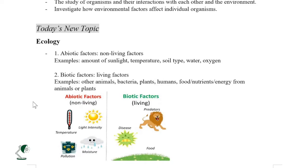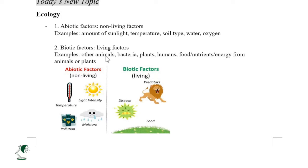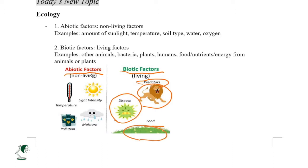Biotic refers to living factors, like humans, dogs, cats, lions, plants, and bacteria. Looking at the diagram, we have a lion as a biotic factor, and bacteria can also be biotic. For abiotic, we have light, sunlight, temperature, pressure, chemical pollution, and moisture.